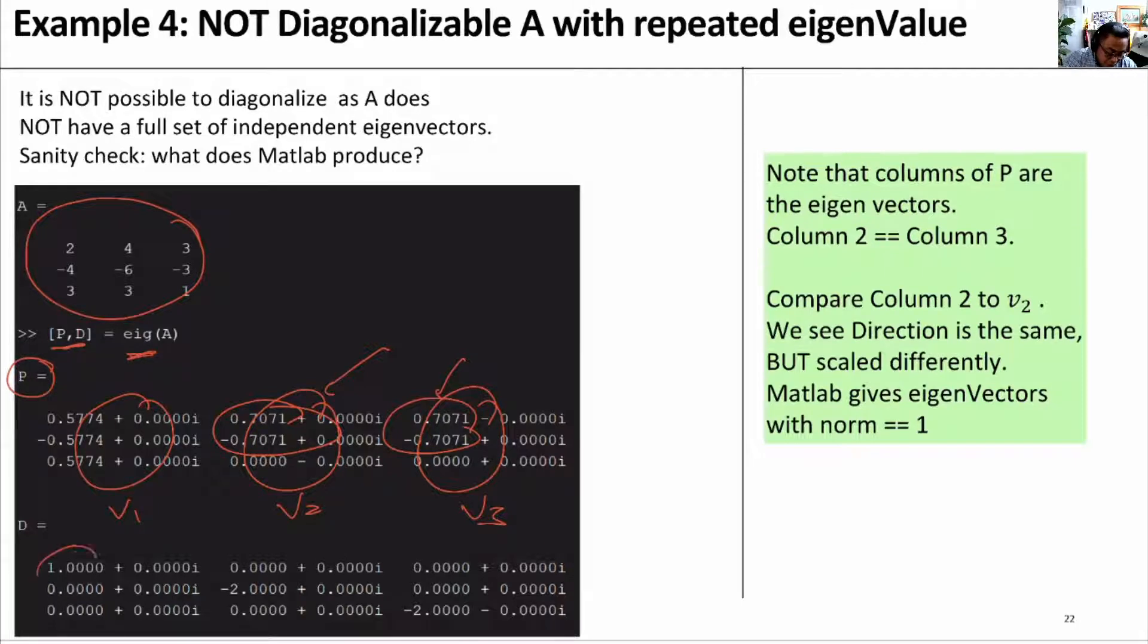What about D? D is 1, minus 2, and minus 2. Notice that it generates complex numbers because of some numerical instability, trying to find eigenvalues and eigenvectors.